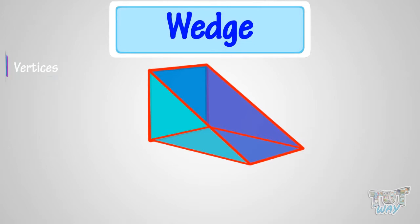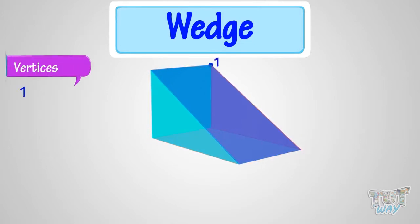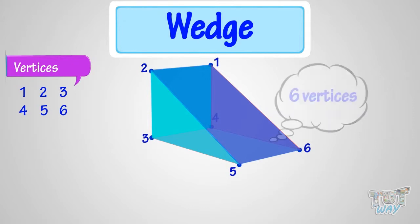Let's count its vertices. One, two, three, four, five, six. So, a wedge has six vertices.